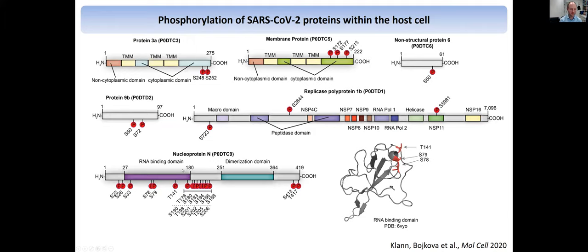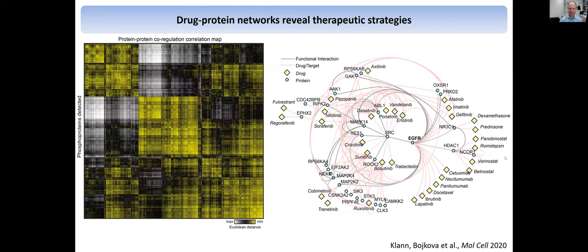There are some interesting things — for example, this RNA binding domain of the nucleocapsid protein N: there's a very similar domain for which there is a structure, and these phosphorylation sites found here are actually all on the same surface. One might speculate that this could affect how this viral protein is interacting with host factors and could in such a way affect cellular behavior. More interestingly, we again looked at the global scale: for all those phosphopeptides we detected, how does phosphorylation of that protein change, and how does this relate to changes in protein levels?